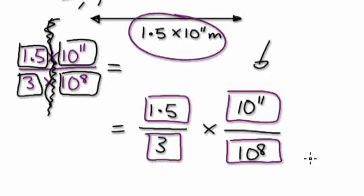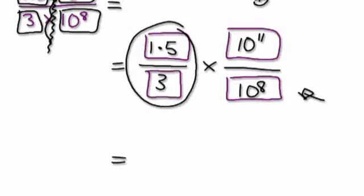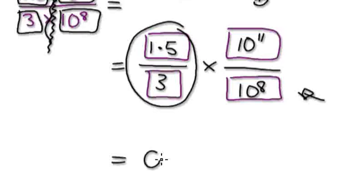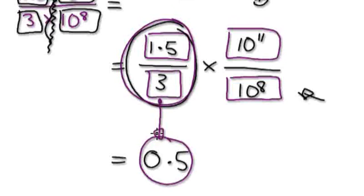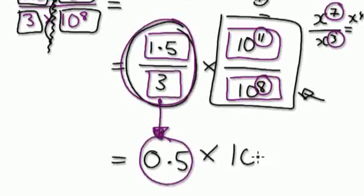1.5 divided by 3 equals 0.5. So the first block gives us a half. Then for the powers of ten — remember, if you have x to the power of 7 divided by x to the power of 3, that gives x to the power of 4; you just subtract the exponents. So 10 to the power of 11 divided by 10 to the power of 8 gives 10 to the power of 3.